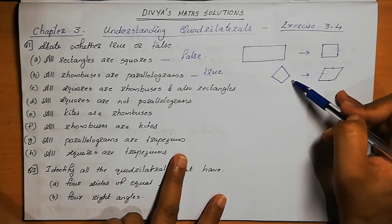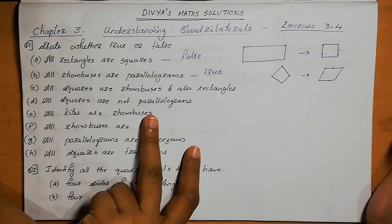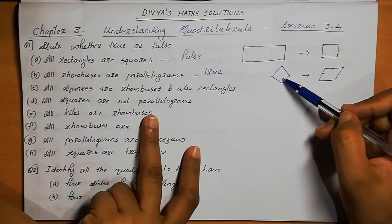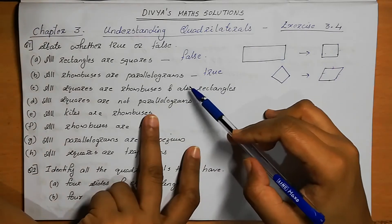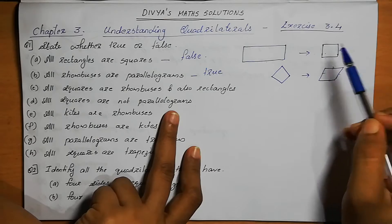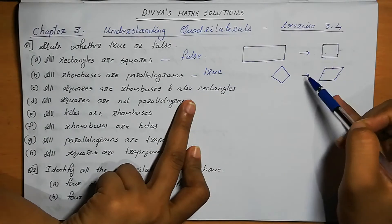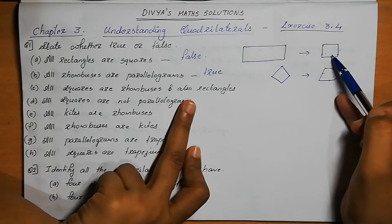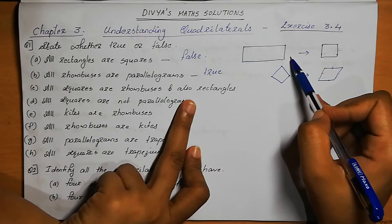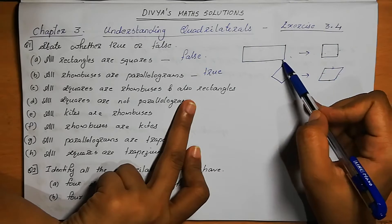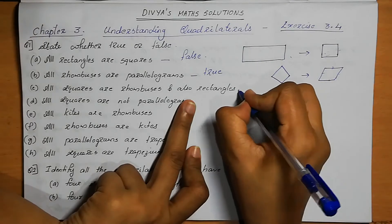All squares are rhombuses — is this possible? Square means all four sides are equal. In a rhombus, all four sides are also equal, so all squares are rhombuses is true. All squares are rectangles is also true. But the reverse — all rectangles are squares — is not possible.